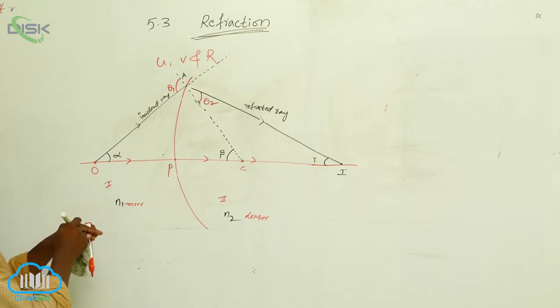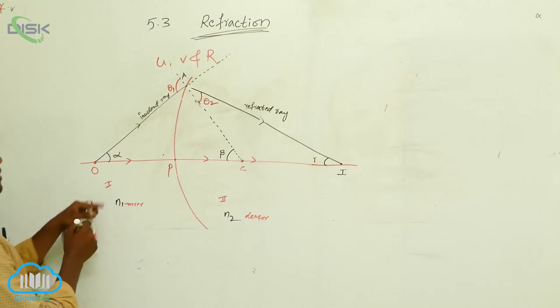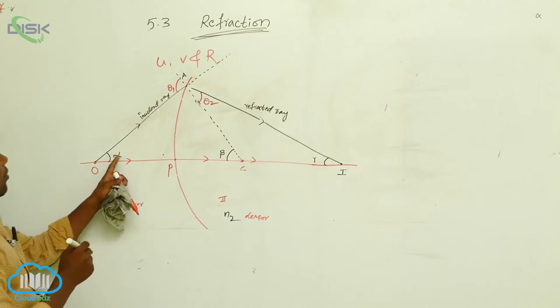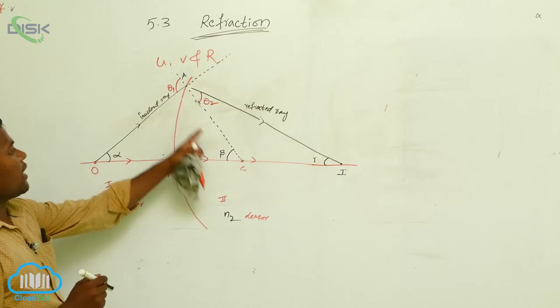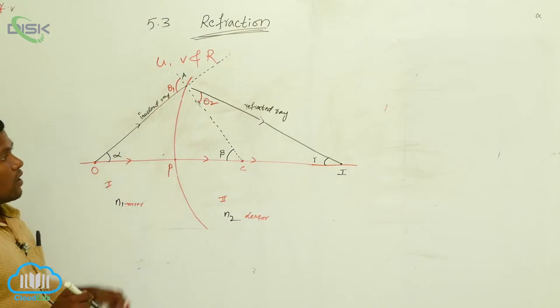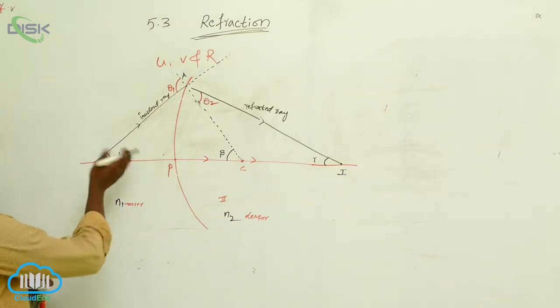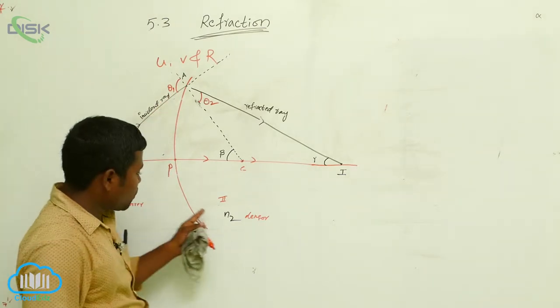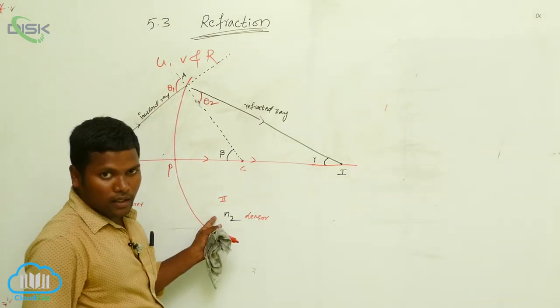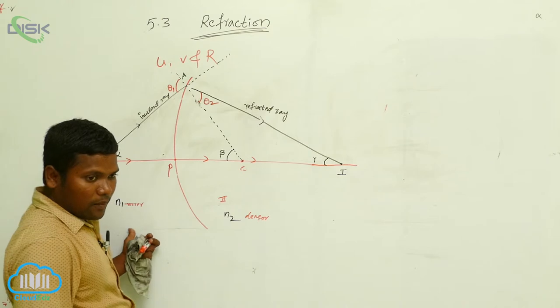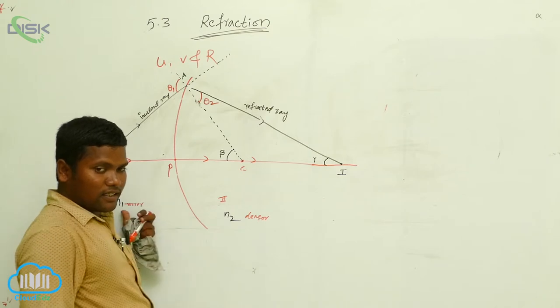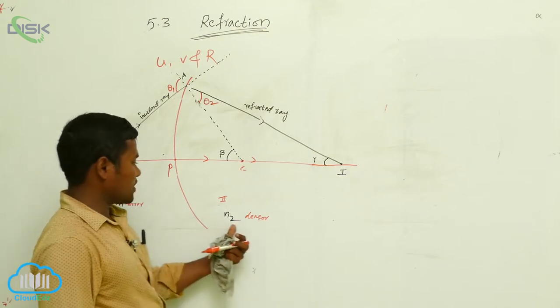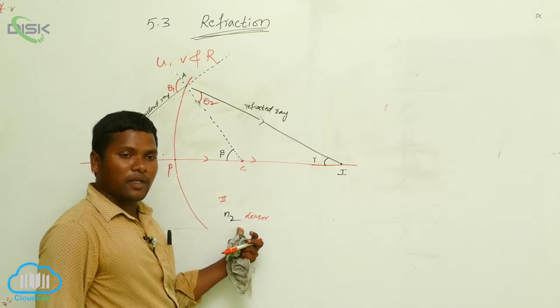Which triangle is there? The first one has alpha, beta, theta. Now here, how many mediums are there? Two mediums are there — one is rare medium on this side and rare medium on this side.